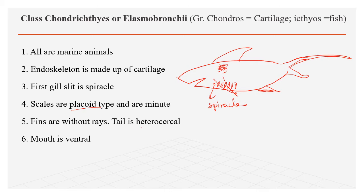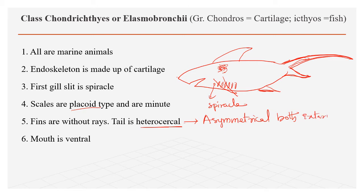The tail is heterocercal — asymmetrical both externally and internally. This means it is asymmetrical both on the outside and on the inside as well.